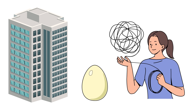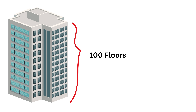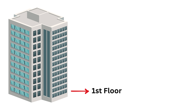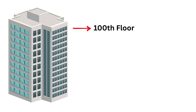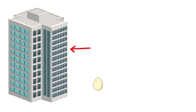Let's see if you can solve this classic egg drop puzzle once asked by Microsoft during an interview. You are given a 100-floor building starting from the first floor all the way up to 100. Then you are given two identical eggs, and you need to figure out the highest floor from which you can drop an egg without breaking it.